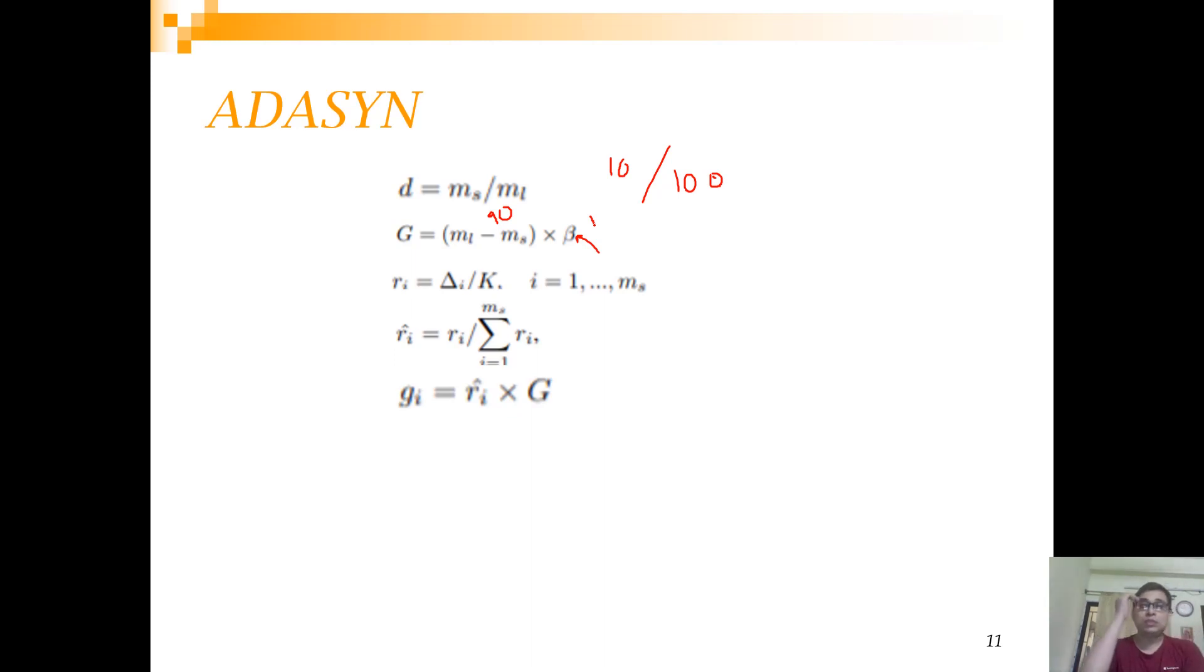Now what we are going to do is you are going to look at the minority class observations and find out how many of its neighbors are majority class. Let's say you have K equal to 5. For a particular minority class observation, out of its five nearest neighbors, two are actually from majority class. So this r_i for that particular minority class will be 0.4. Then what you do is you convert these absolute values into a probability distribution. You get a kind of a probability density function.